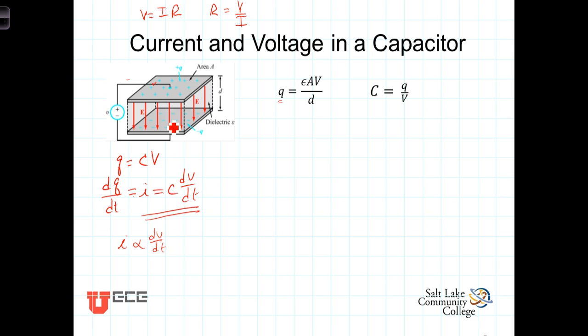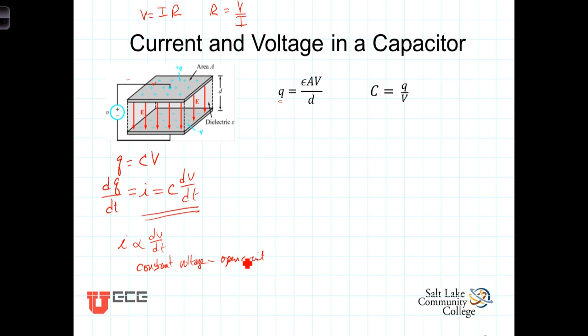So the first observation is that you can have voltage without current, but if the voltage is changing, there will be a current present. Another way of looking at that is that under constant voltage, the capacitor acts as an open circuit — meaning there's no current flowing through it, but there may be a non-zero voltage across those open circuit terminals.